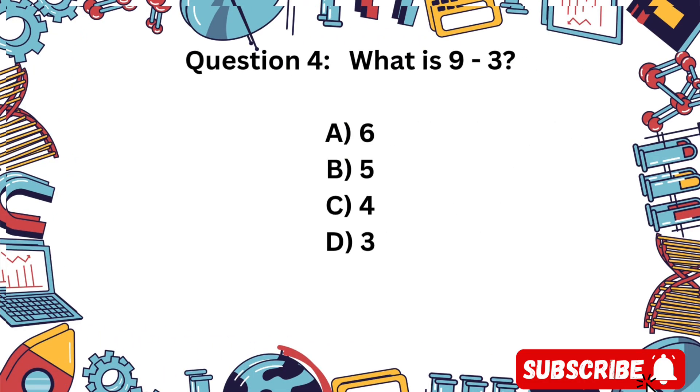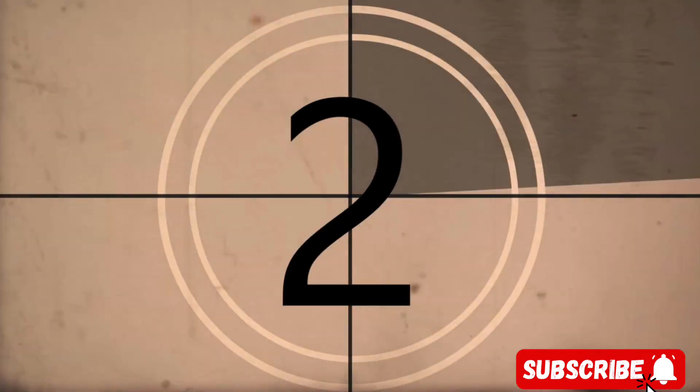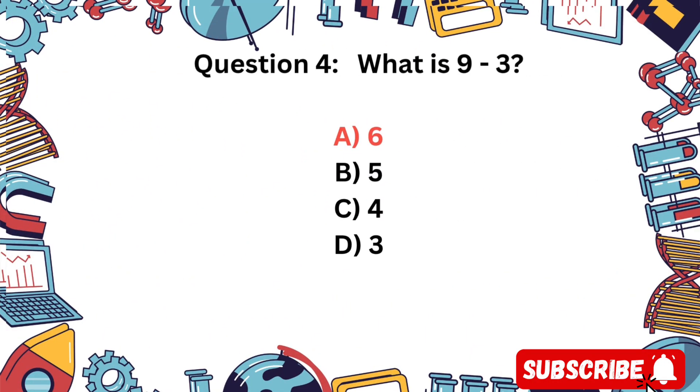Question 4. What is 9 minus 3? A) 6, B) 5, C) 4, D) 3? You got it! 9 minus 3 equals 6.